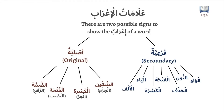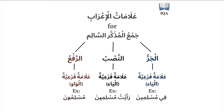Here we will cover how the Jama' Mudhakkar Salim — the sound masculine plural — takes secondary signs of I'rab rather than the original signs. For Raf'a, it takes a secondary sign which is the Waw.